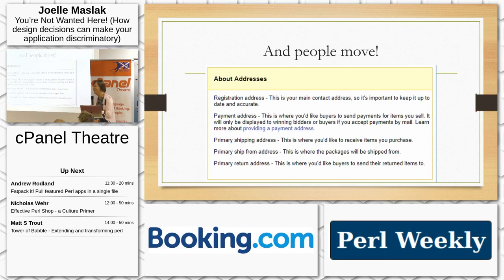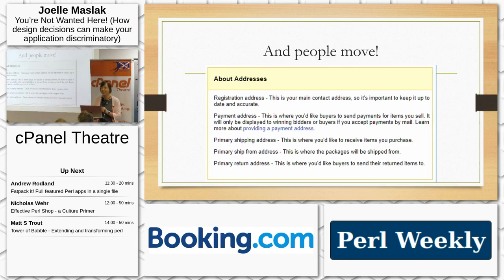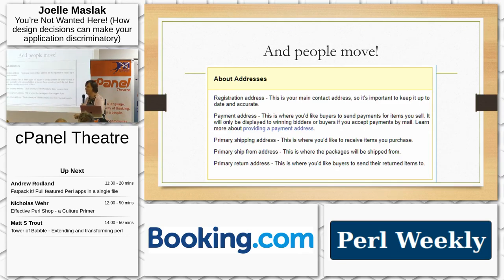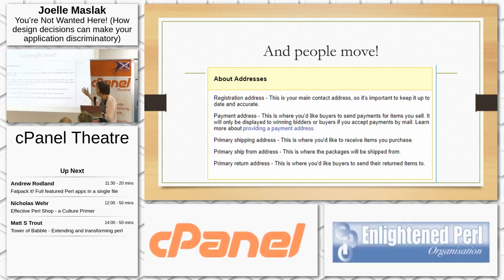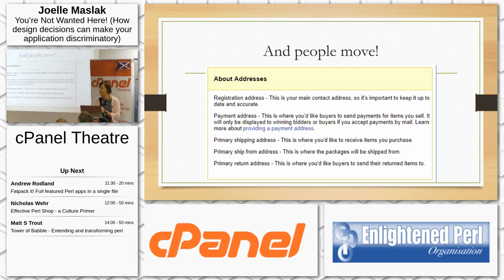eBay shows five different addresses you can update — registration, shipping, and more. If you update your registration address but not your shipping address, your package goes to your old address. If someone changes one address, prompt them: are you trying to change all of them? Do you know these other addresses exist?